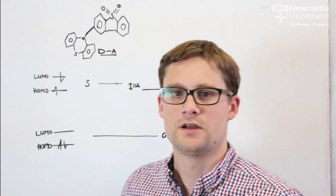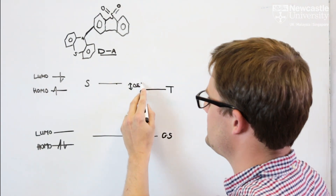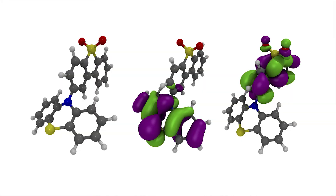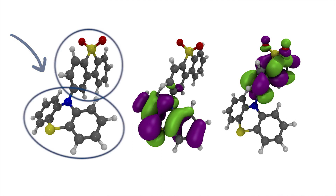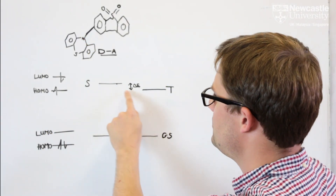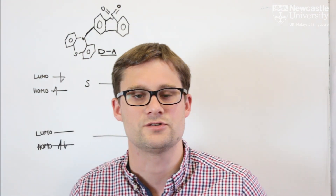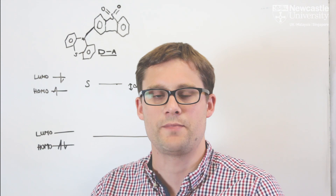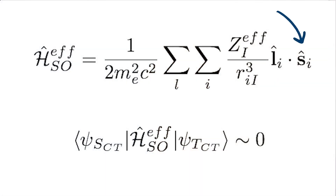One challenge is that we don't only have to consider the energy gap between these two states — we also have to consider what actually drives the communication between them. Most molecules in the literature exhibiting TADF are based upon charge transfer molecules, in which we have an electron donor group and an electron acceptor group coupled via a bond. Upon excitation, an electron is transferred from the donor to the acceptor group generating a charge transfer triplet state. Between singlet and triplet states, coupling is provided by spin-orbit coupling, which has two components: the spin angular momentum and the orbital angular momentum.